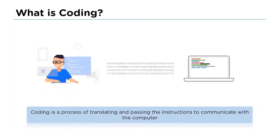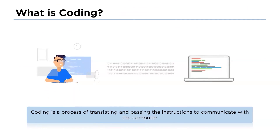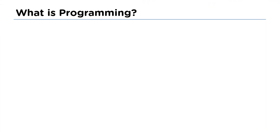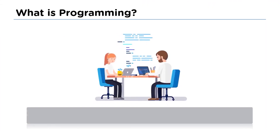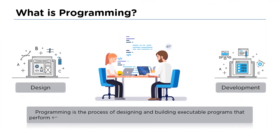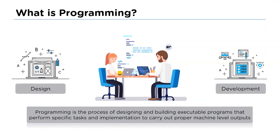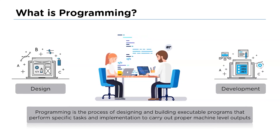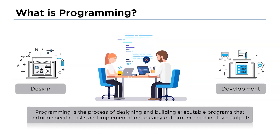A computer does not understand human language, so in order to communicate with a computer we use languages that require coding. Coding is a way of passing and translating instructions for communication with the computer. Programming is a process of designing and building executable programs to work on specific tasks that involve analysis, generation, and implementation of algorithms.